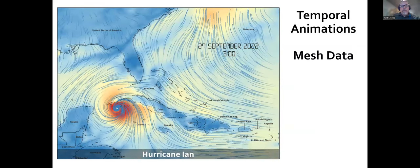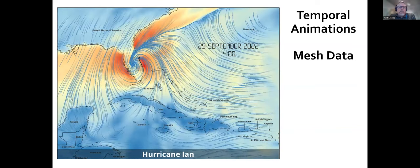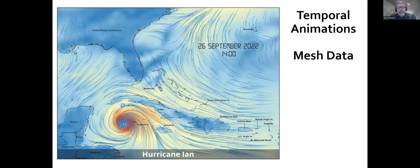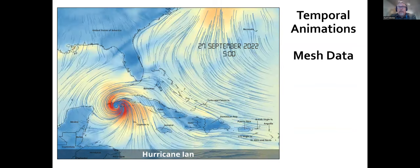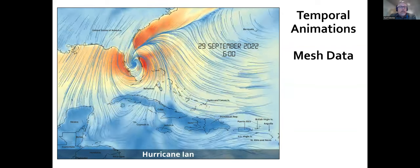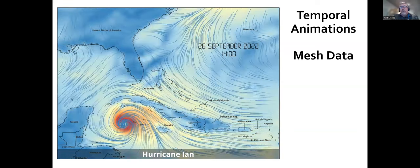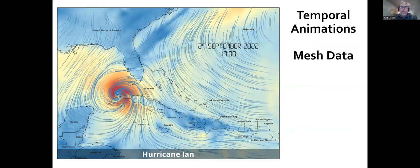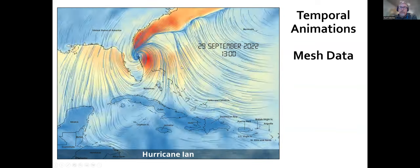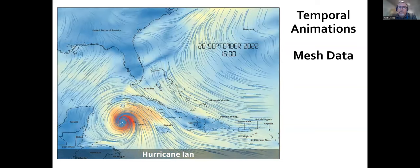QGIS also supports mesh data and time-based data. This is a mesh dataset that covers Hurricane Ian, which had just hit Florida a couple of weeks ago. I was able to very quickly put together an animation because this data model supports time — I can show how the hurricane moved across Florida over time and put the timestamp on the map. QGIS has some really nice tools to allow you to do very sophisticated data visualizations.